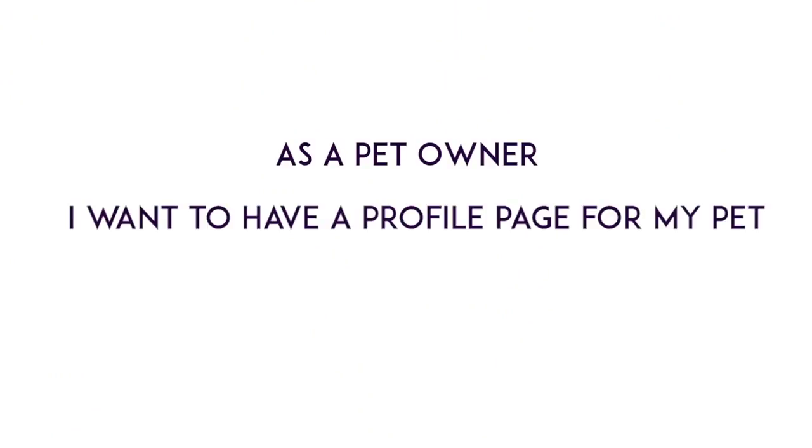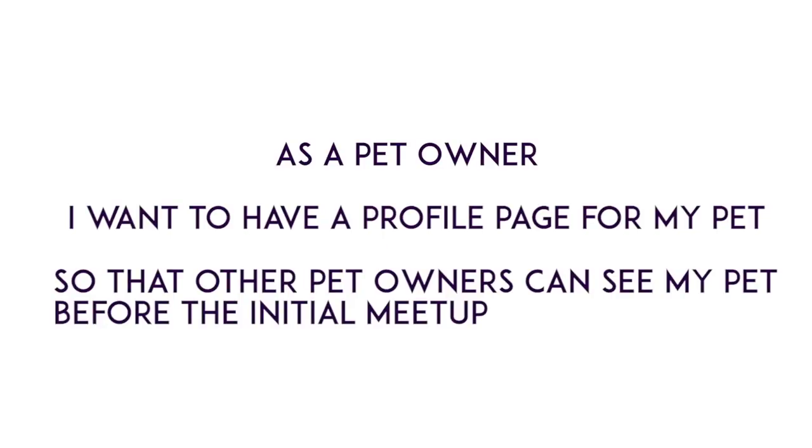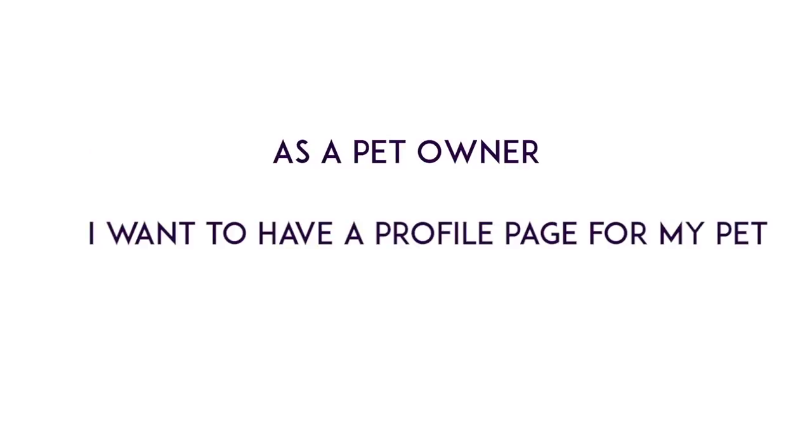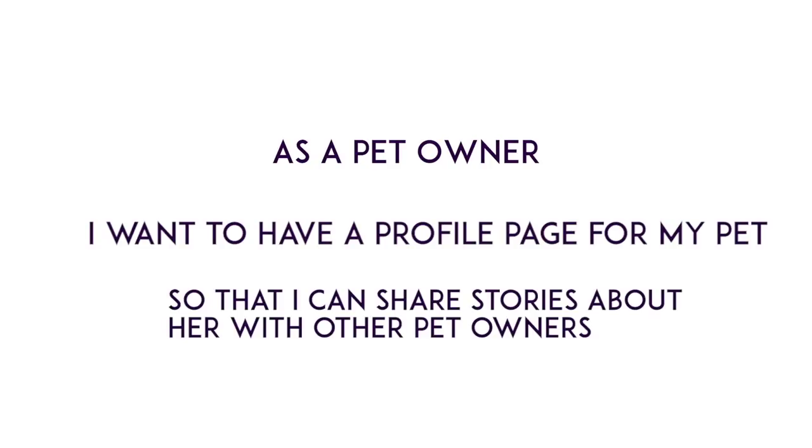Let's say we're building an application for dogs to meet other dogs in their city. Let's call it Sniffs and Wolves — kind of like Meetup, but for pet owners and dogs. From a user's perspective, a pet owner might want their pet to have a profile page, and this is a requirement. So a user story might go: as a pet owner — that's the role — I want my pet to have a profile page — that's the what — so that other pet owners can see my pet before the initial meetup — that's the why. Or another version: as a pet owner, I want my dog to have a profile page so that I can share stories with other pet owners.